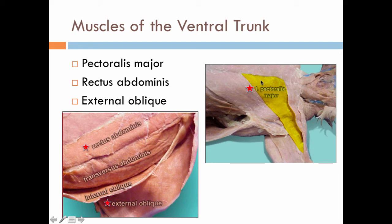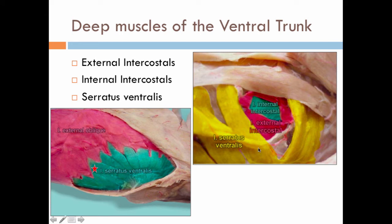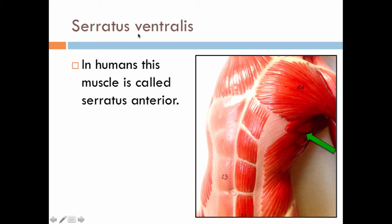Remember that the muscle fibers of the rectus abdominis run parallel with the midline, while the obliques run diagonal. Deep muscles of the ventral trunk include the external intercostals and the internal intercostals, and then the serratus ventralis. Here's a slightly different view of the serratus ventralis — with the head end and tail end oriented here. These are deep muscles, as opposed to superficial.